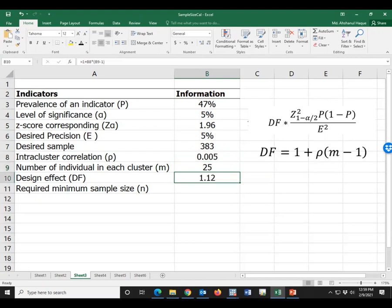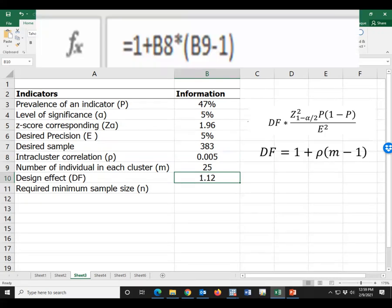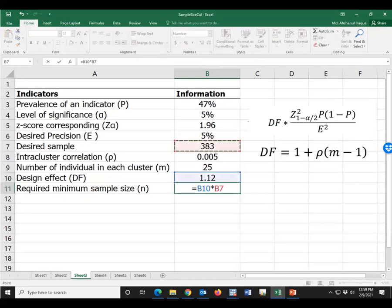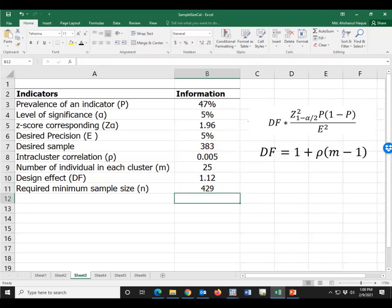Then, using this formula, the design effect is 1.12. Now we multiply with design effect. Therefore, total sample size is 429.